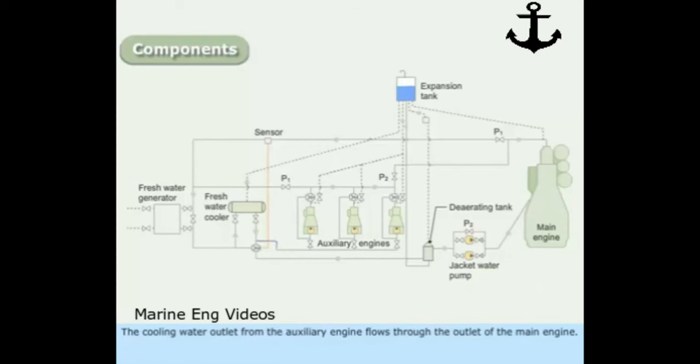The cooling water outlet from the auxiliary engine flows through the outlet of the main engine. The water circulates inside the main engine and flows back to the de-aerating tank through the pump bypass valve P2.